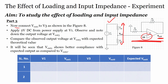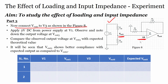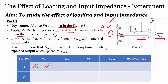Connect V_out1 to V3 as shown in the figure. Instead of 5 volts we are applying 2 volts DC. Observe and note down the output voltage V_out3 — that is, if I apply 2 volts, what is V_out3? Then compare the observed output voltage V_out3 with the expected theoretical value.